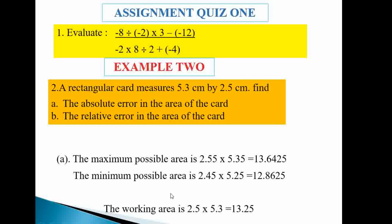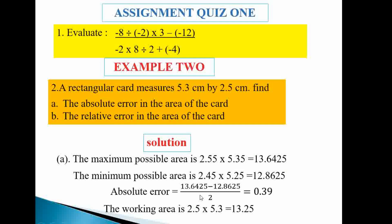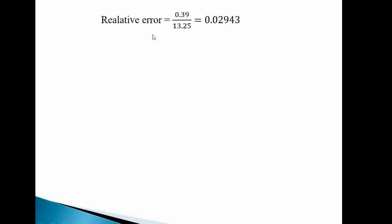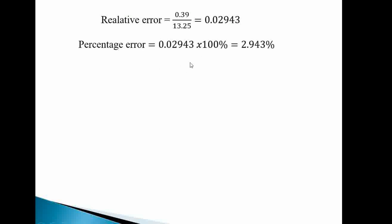Absolute error = (13.6425 − 12.8625) / 2 = 0.39. Relative error = 0.39 / 13.25 = 0.02943. Percentage error = 0.02943 × 100 = 2.943%. That is the percentage error.